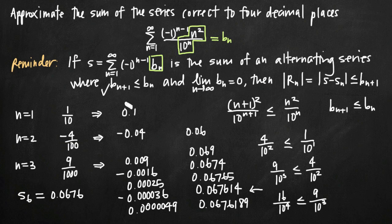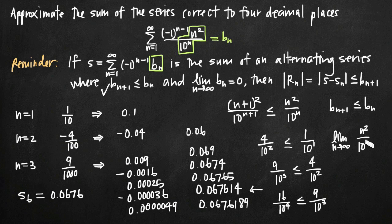For the second part, we take the limit as n goes to infinity of b sub n, which is n squared divided by 10 to the n. If we plug in a very large number like 1 million, while n squared grows quickly, 10 to the n grows much, much faster. Therefore the denominator is significantly larger than the numerator, and the expression tends toward 0. So the limit as n goes to infinity of b sub n equals 0, and both conditions of the alternating series estimation theorem are satisfied.